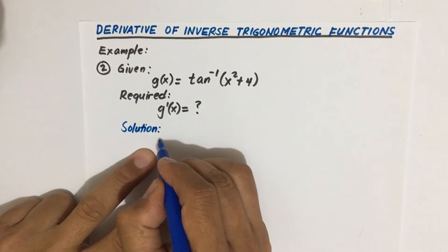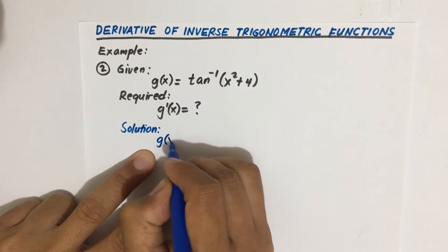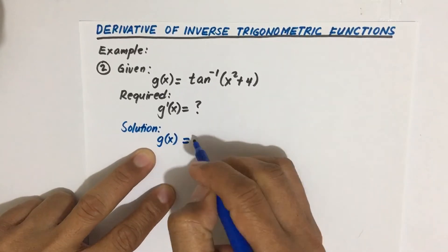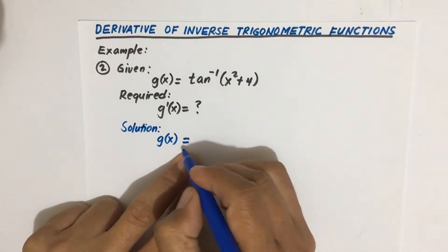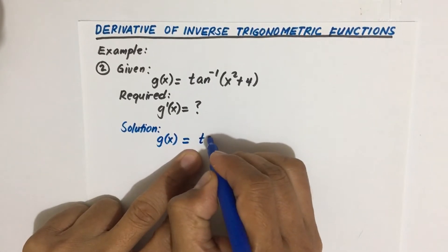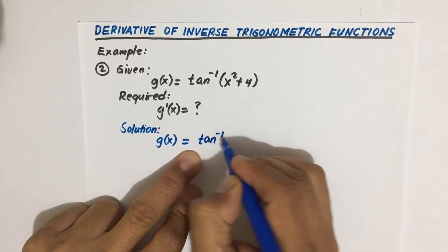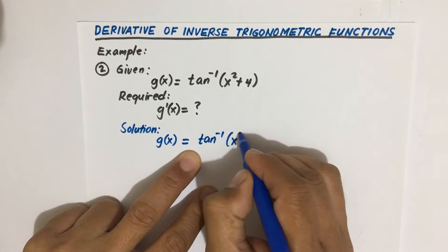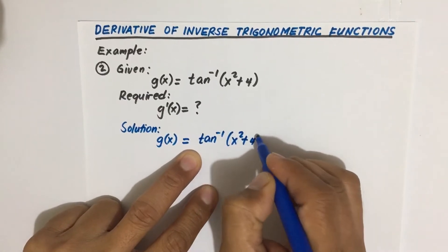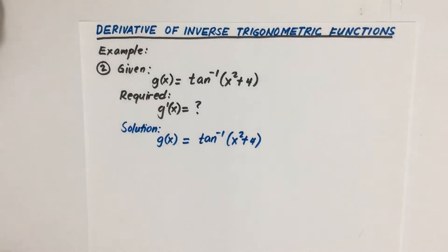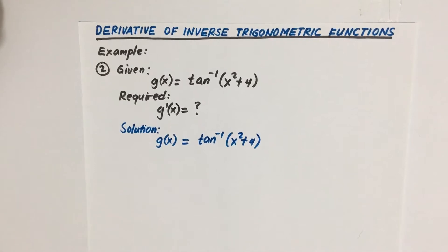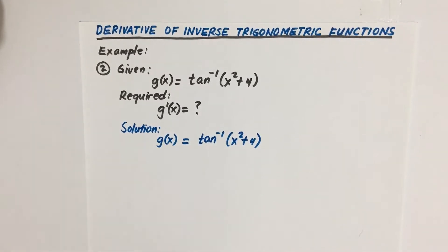All right, so we're given g of x equal to arc tangent or inverse tangent of x squared plus 4. Okay, so what formula shall we use for this one?